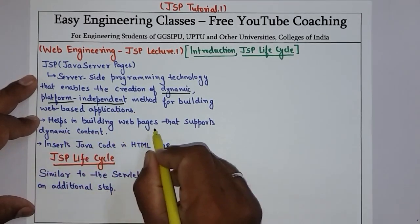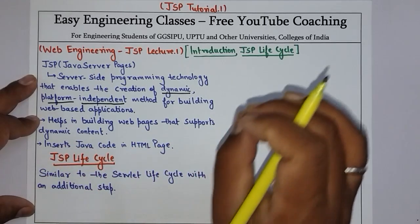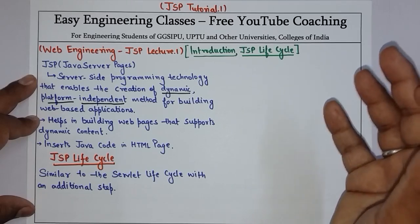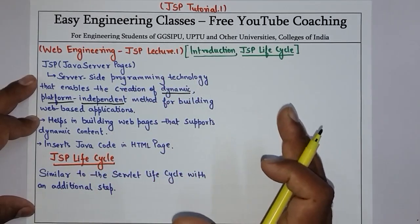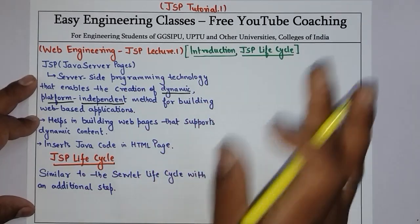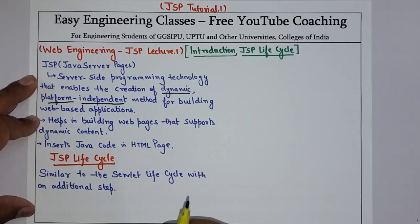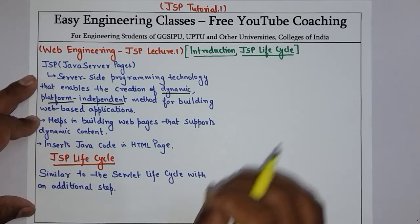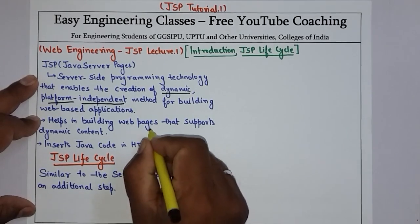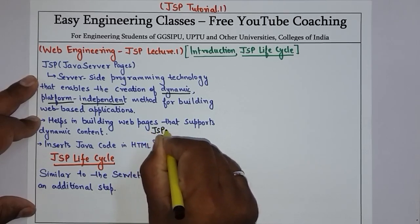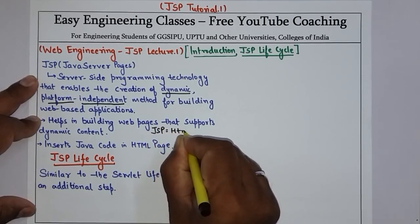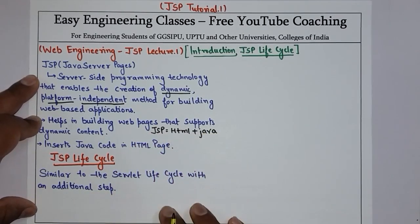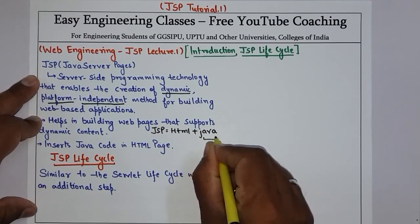JSP helps in building web pages that support dynamic content. Since HTML pages are static web pages, we need some dynamic HTML pages, and for that JSP can be used. So what is JSP? JSP is Java code in an HTML page — JSP equals HTML plus Java code — in which the Java code is embedded into the HTML.